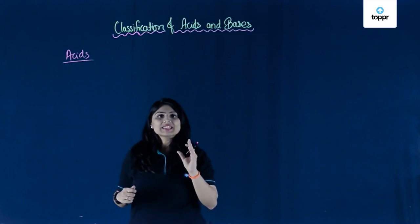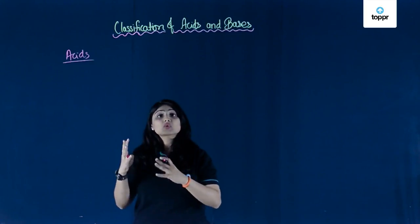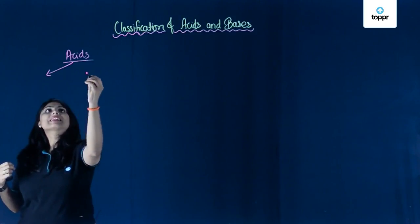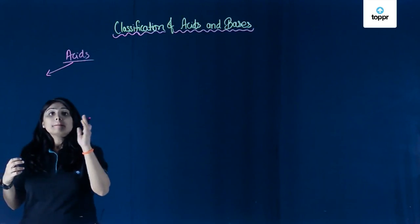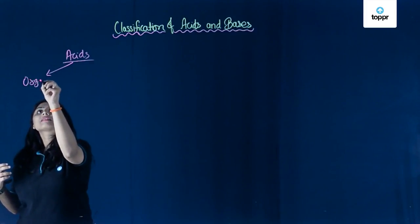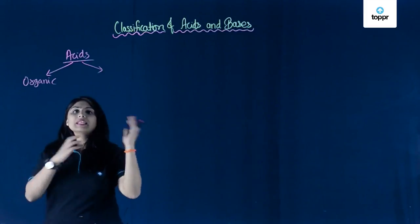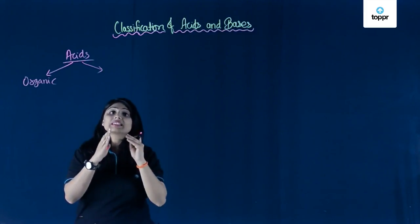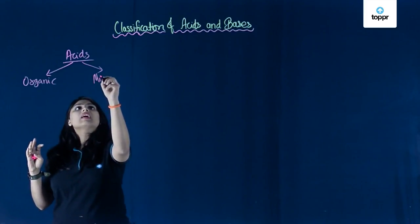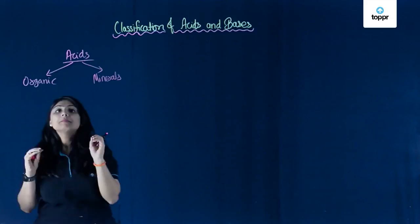Acids are classified first on the basis of their source — where they come from. Acids can either come from plants, animals, or humans, and they are called organic acids. They can also come from minerals, which are materials found in the earth's crust. If we get acids from minerals, they are called mineral acids.